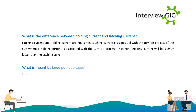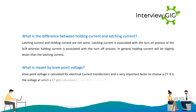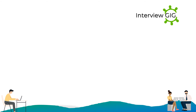What is meant by knee point voltage? Knee point voltage is calculated for electrical current transformers (CT) and is a very important factor in choosing a CT. It is the voltage at which a CT gets saturated.